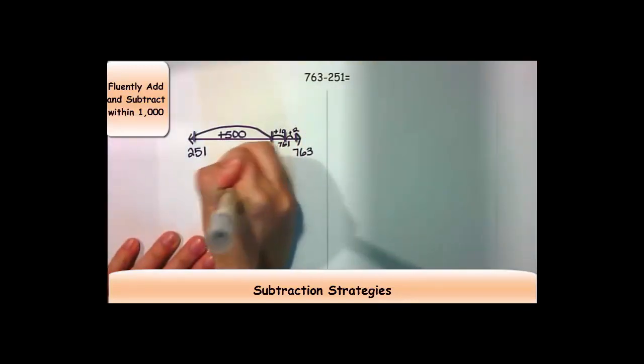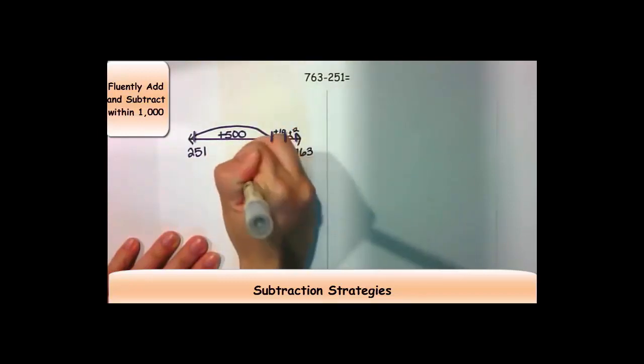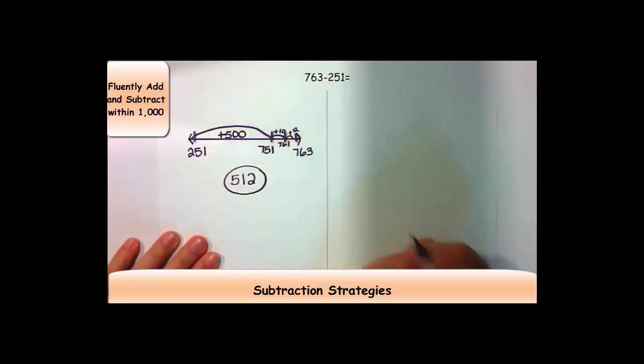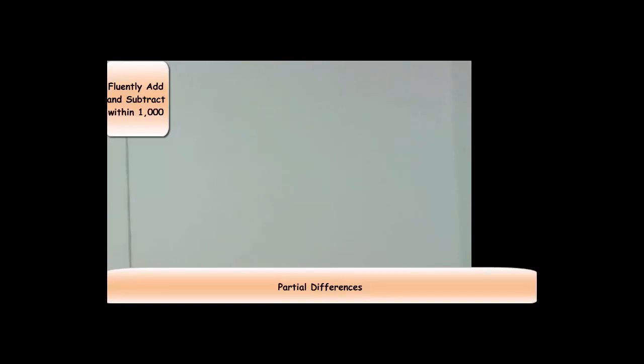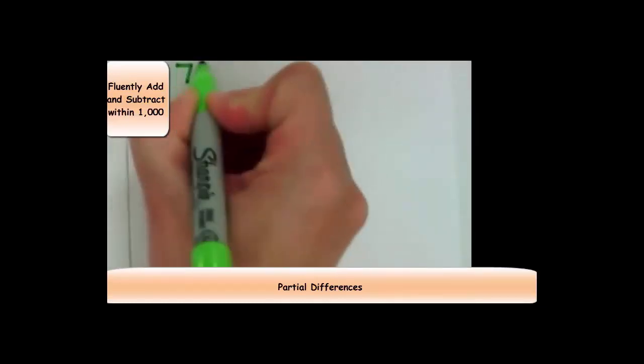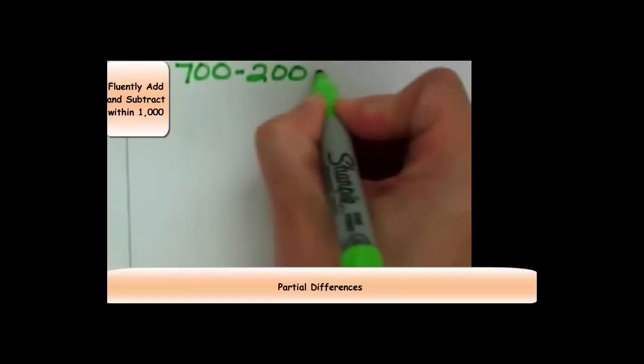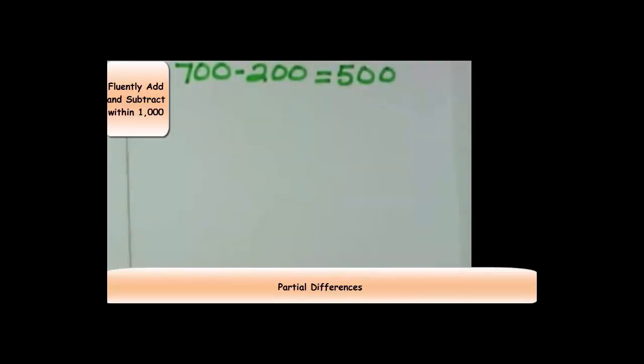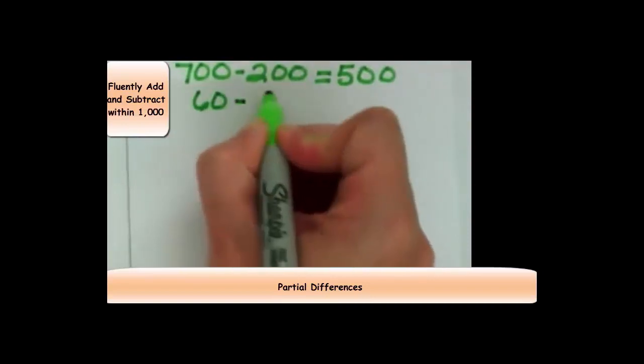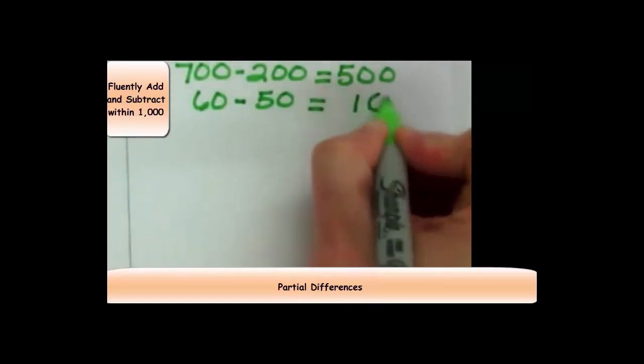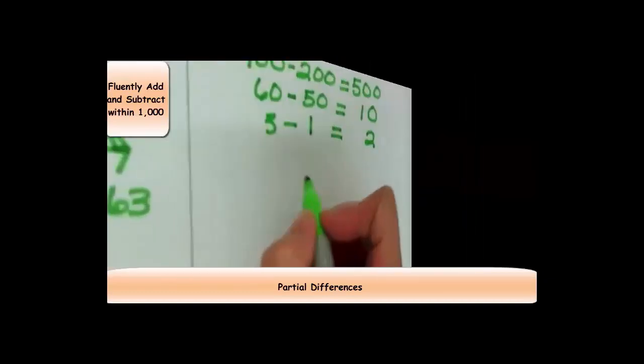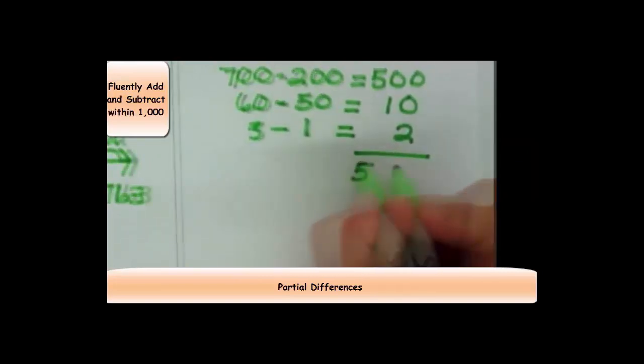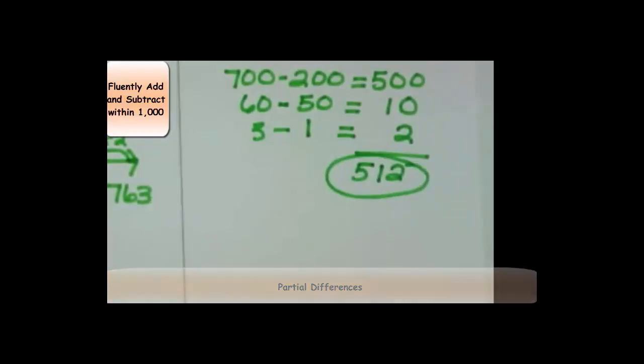In total, I added 500s, 1 ten, and 2 ones. My difference is 512. The next strategy that I'm going to talk about is very similar to the partial sums strategy and addition. I'm going to subtract by the different place values. Starting with my hundreds, I have 700 minus 200. 700 minus 200 is 500. Then I have 60 minus 50. And I know that that is a difference of 10. Last, I look at the ones place. And I have 3 minus 1, which equals 2. If I add the sum of my differences, I get a total difference of 512, which is my difference.